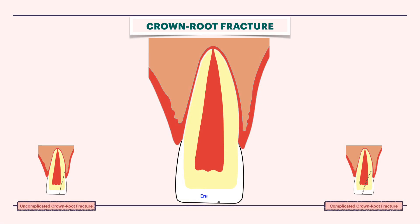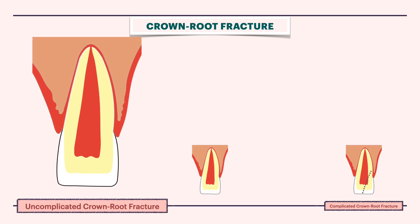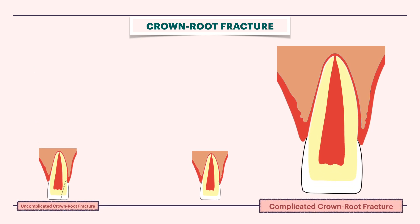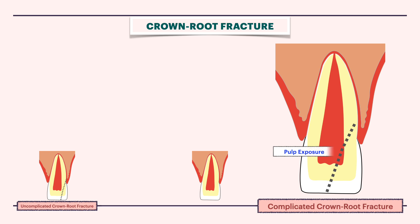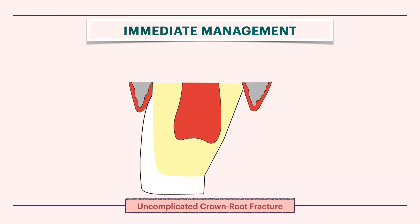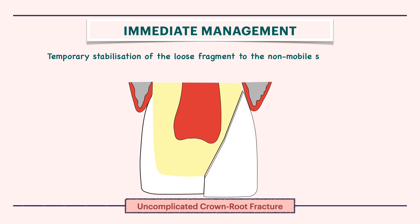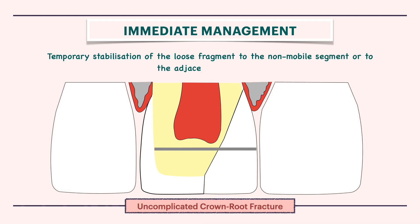Crown root fracture involves fracture of enamel, dentine and cementum. It can be an uncomplicated crown root fracture with no pulp involvement, or it can present as a complicated fracture with an exposed pulp. The immediate management of uncomplicated crown root fracture involves temporary stabilization of the loose fragment to the non-mobile segment or to the adjacent teeth.